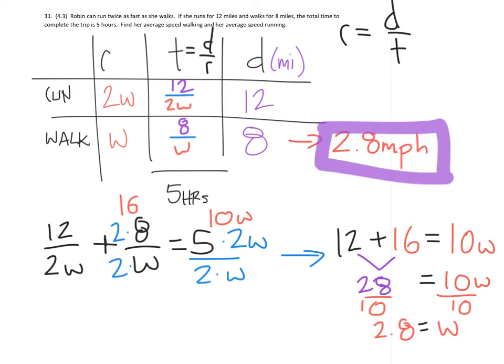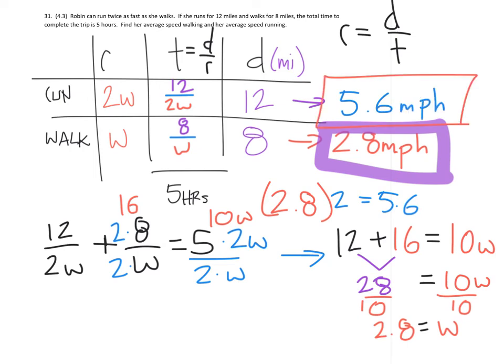And then the final thing we're going to want here is the running rate. And the running rate, as we look back, was just 2 times the walking rate. So we're just going to double this. So we have 2.8 times 2, which would give us 5.6. And again, that's the running rate. So the running rate was 5.6 miles per hour.